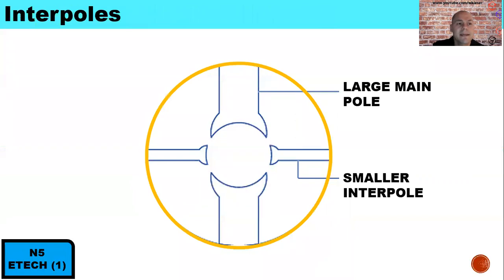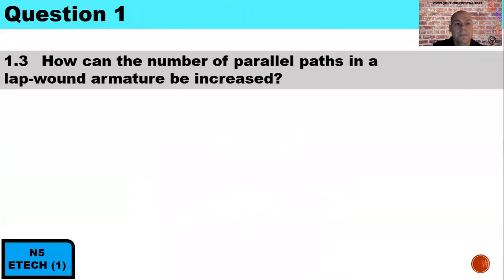The concept on interpoles: interpoles are the smaller poles found in between the main poles. Question 1.3: How can the number of parallel paths in a lap wound armature be increased? By using interpoles.